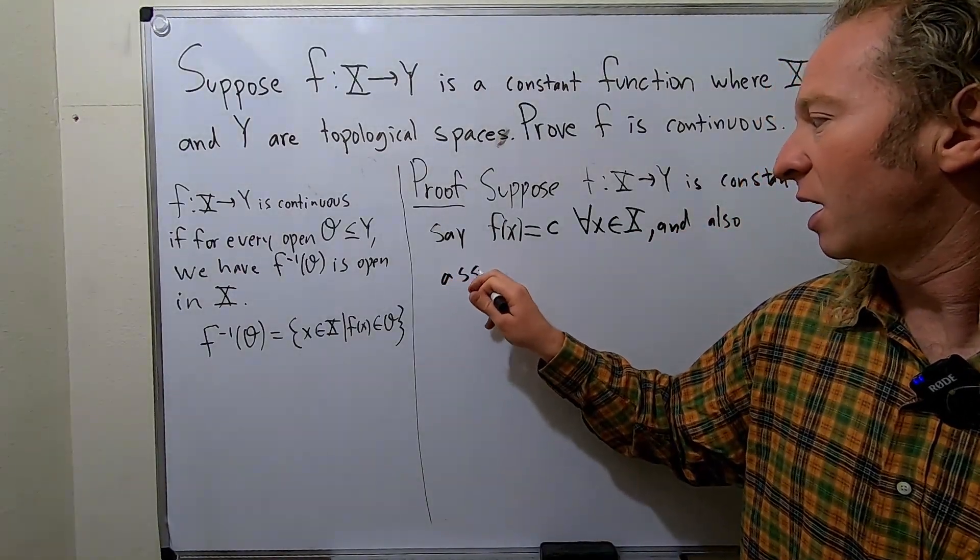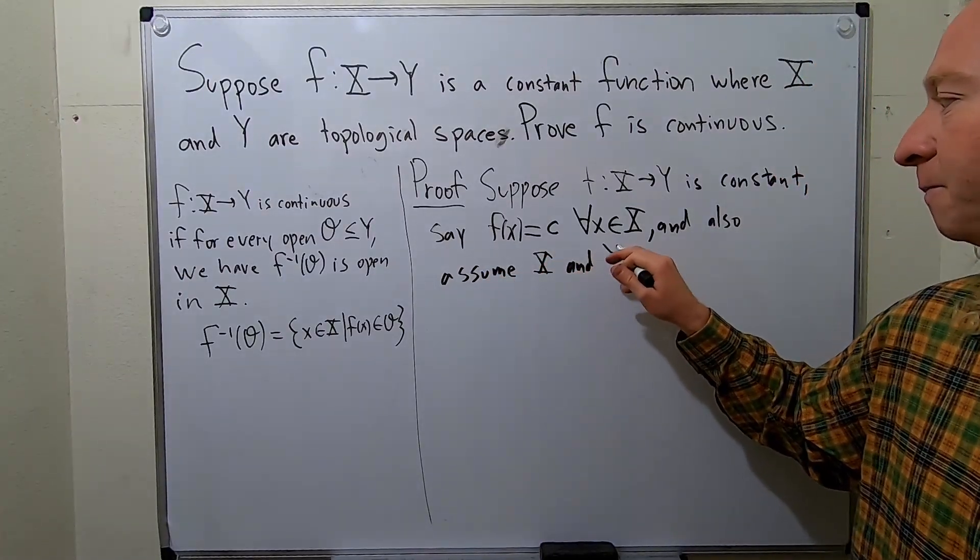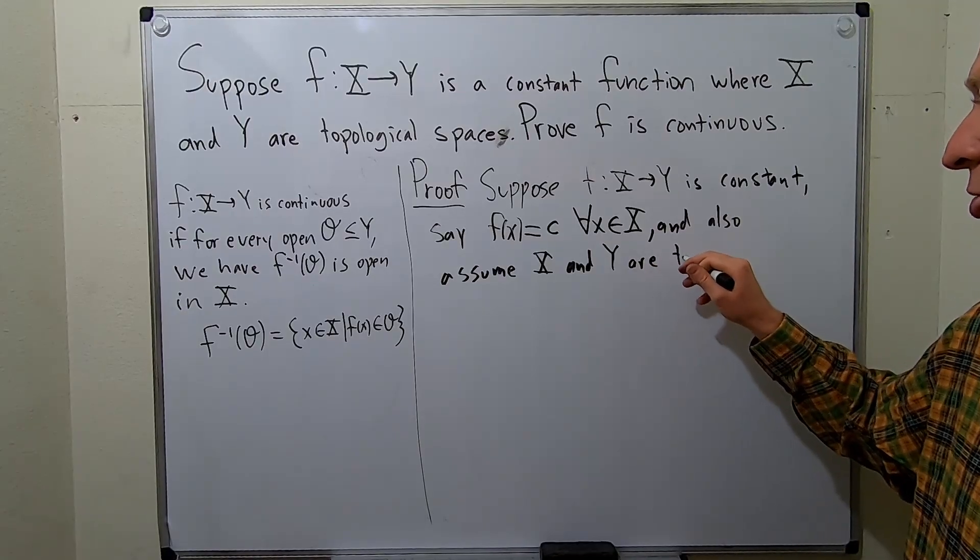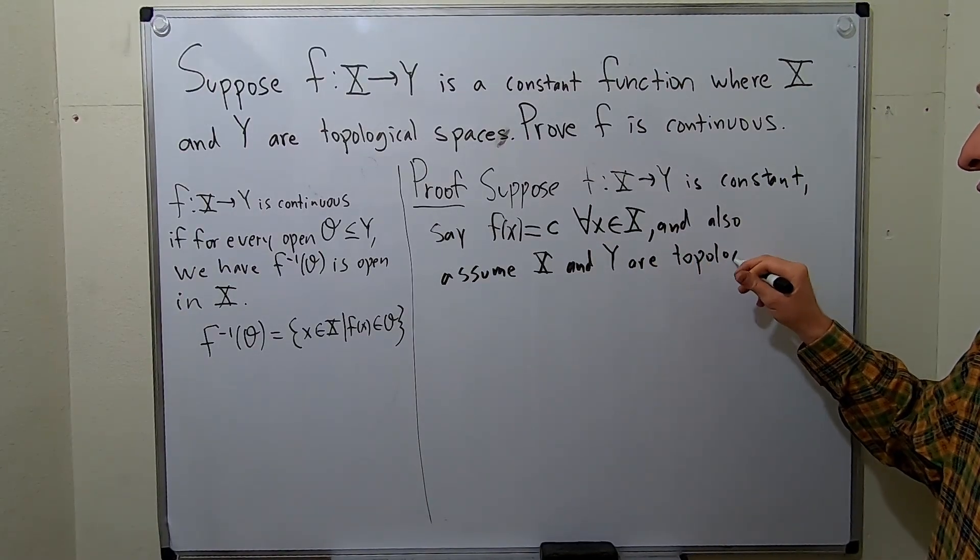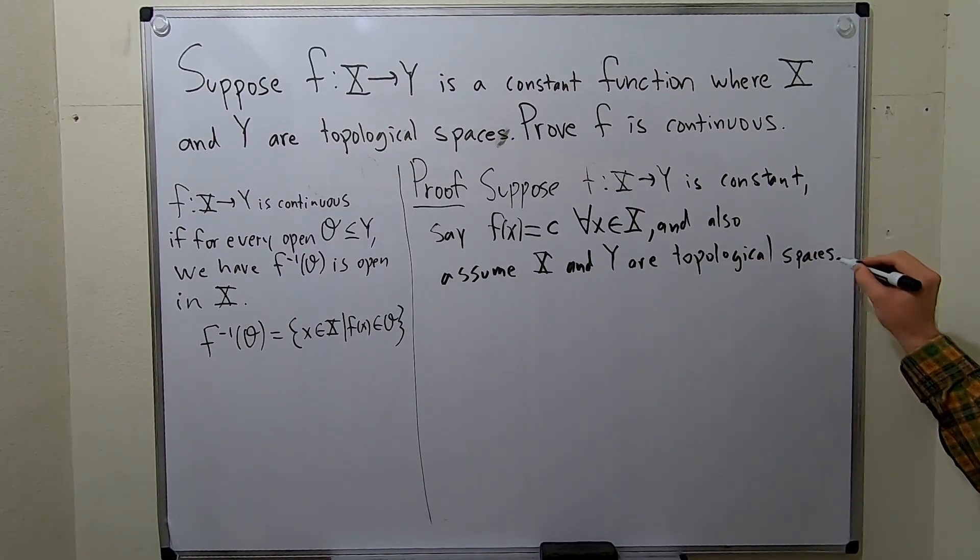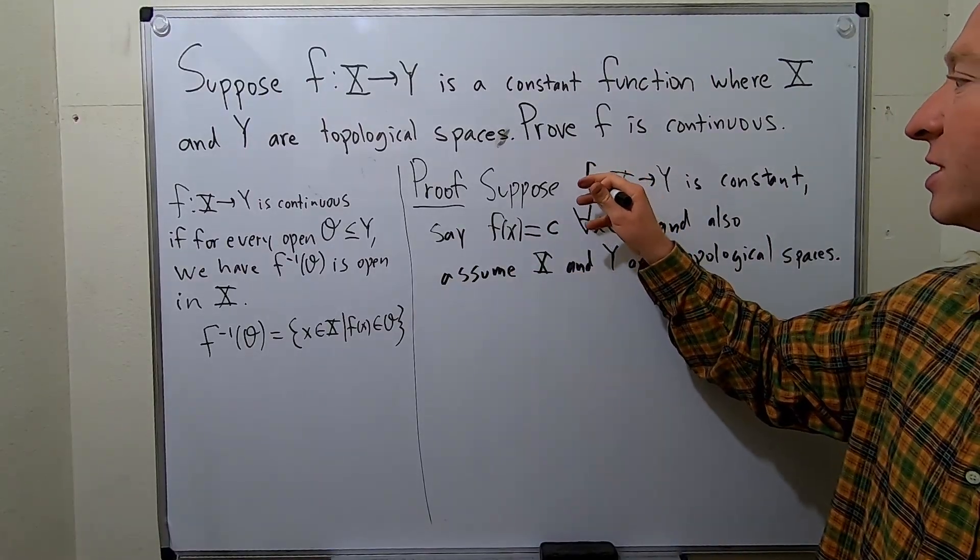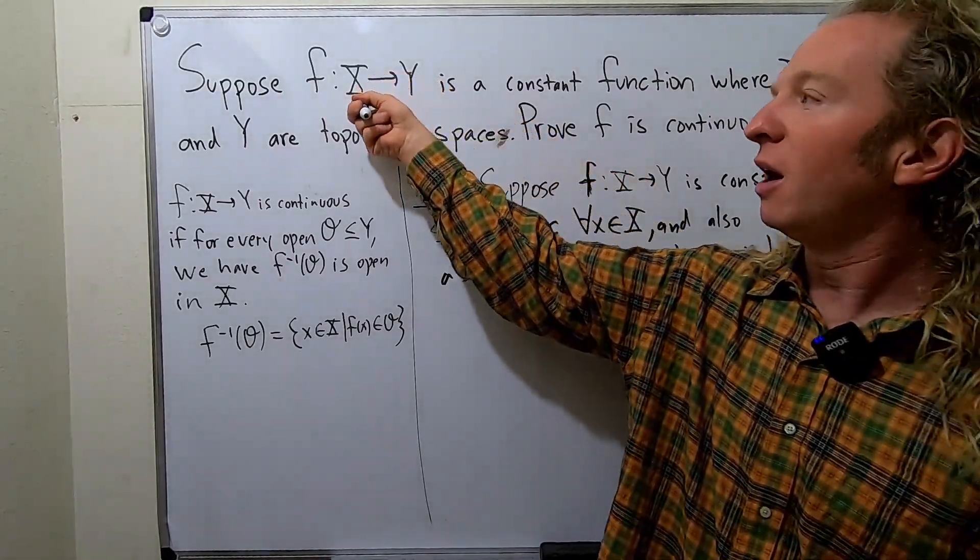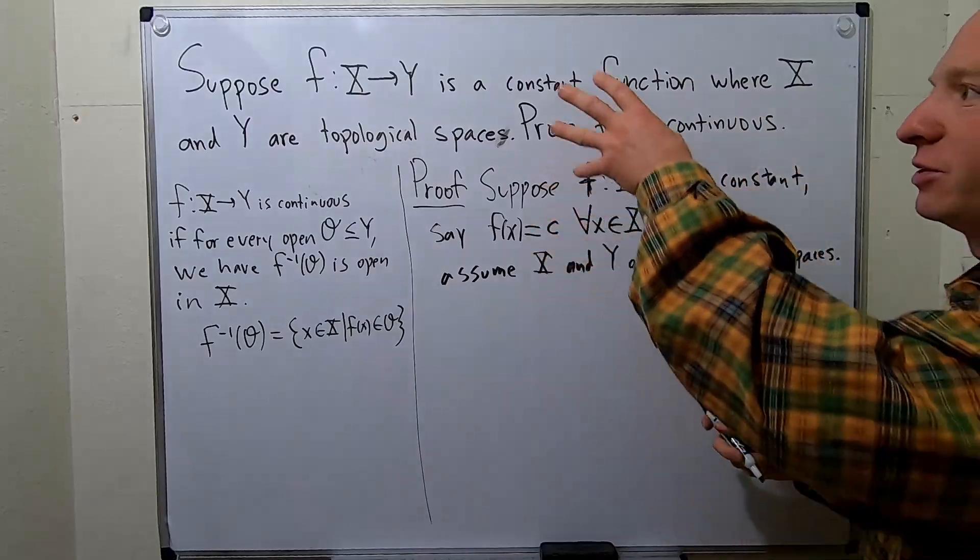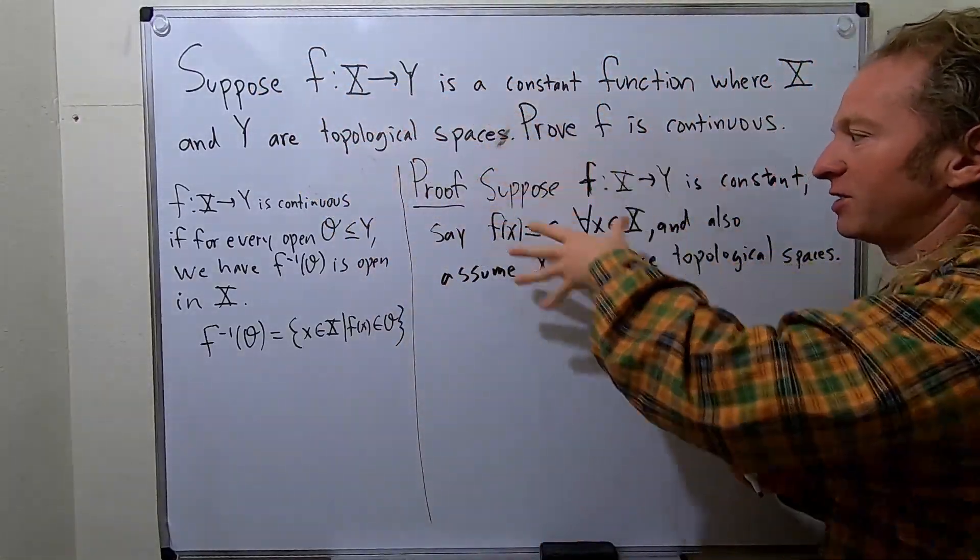I probably should have said that first, but too late. So topological spaces. And again, if you're writing out a formal proof, you're supposed to say something like this. You're supposed to start by writing down your hypothesis. You know, maybe you can say, let x and y be topological spaces. Suppose it's a constant function.